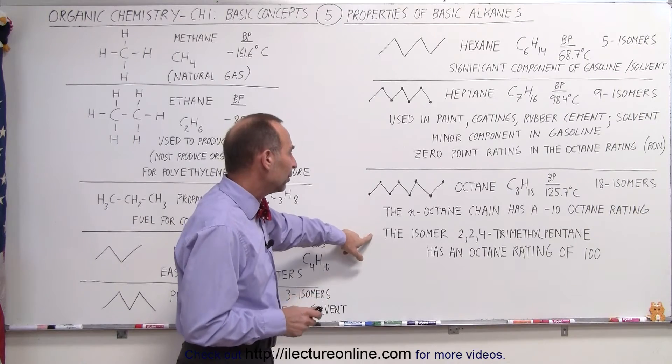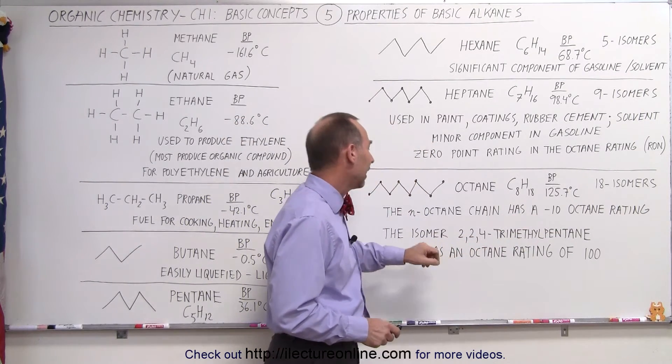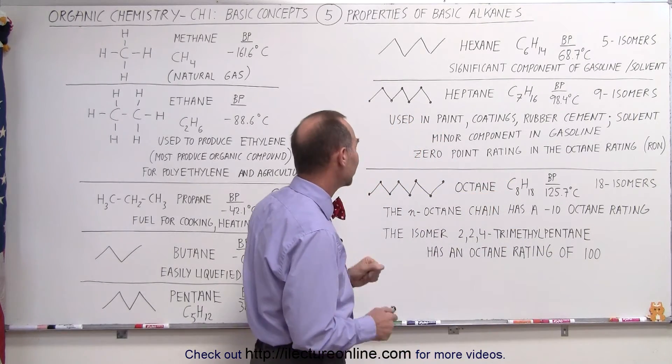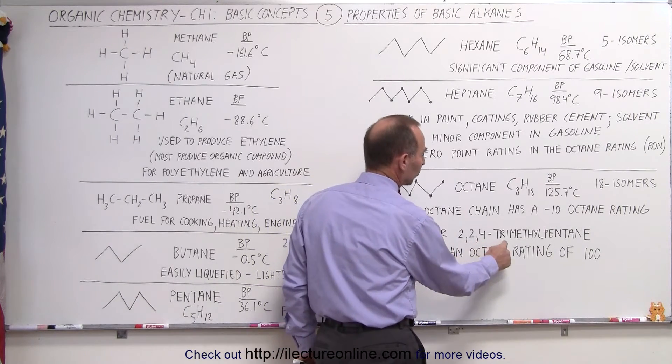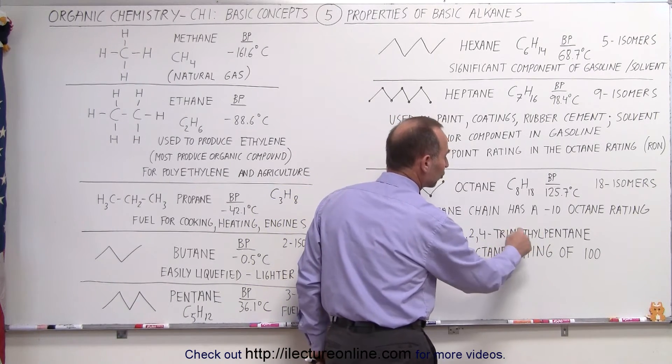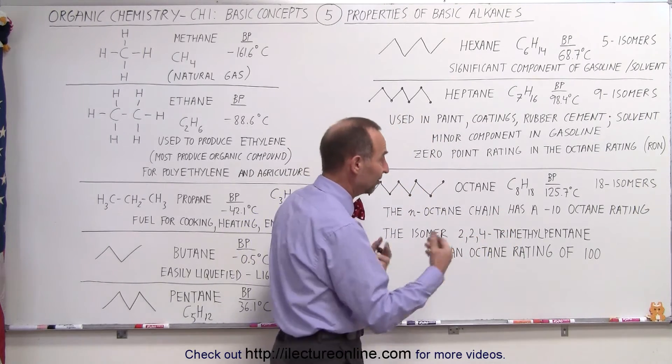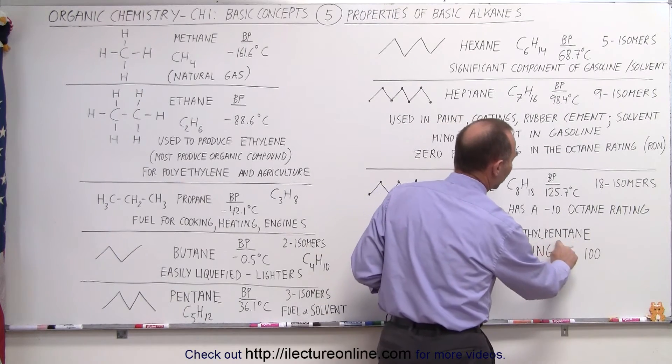The isomer 2,2,4-trimethylpentane has an octane rating of 100. Now this is one of the 18 isomers of octane. Notice 2,2,4 meaning there are three methyl functional groups attached to the remaining five carbon chain. Since the remaining five carbon chain is only five carbons it's called pentane.